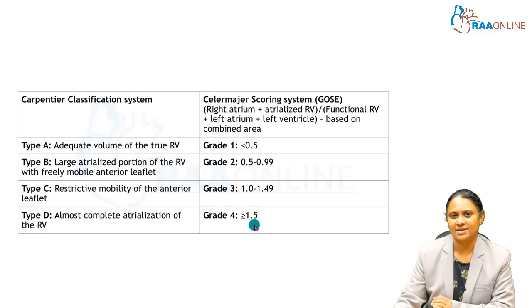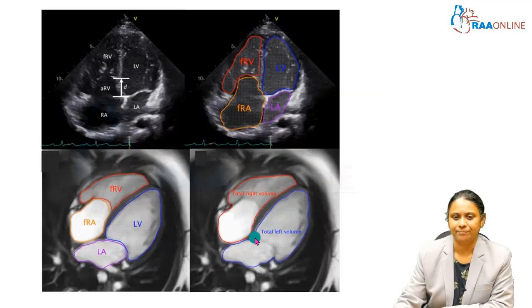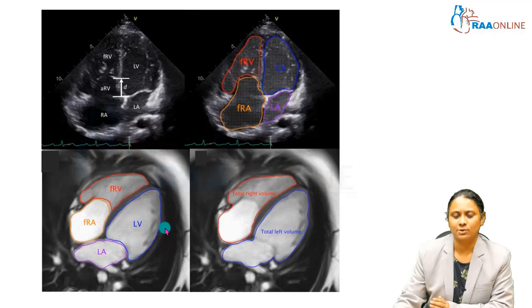The SAS score is a surgical scoring system with a maximum score of 10. A Seller Major score greater than 1 is included as one component of the SAS severity score, which increases post-surgical mortality to 90 percent. By echocardiography, we calculate the area — the area of the right atrium including the atrialized portion of the right ventricle, divided by the other three chambers. By MRI, we can calculate the volume, but the scoring system does not include the volume of the right atrium.